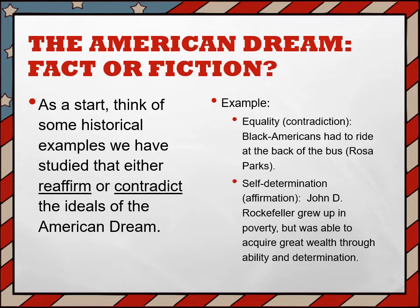As a start, think of some historical examples we have studied that either reaffirm or contradict the ideals of the American Dream. Here are a few examples to get you started. One could argue that the ideal of equality is a contradiction based on how black Americans had to ride at the back of the bus, like Rosa Parks. On the other side, self-determination reaffirms the American Dream — if we look at the life of John D. Rockefeller, he grew up in poverty but was able to acquire great wealth through ability and determination.